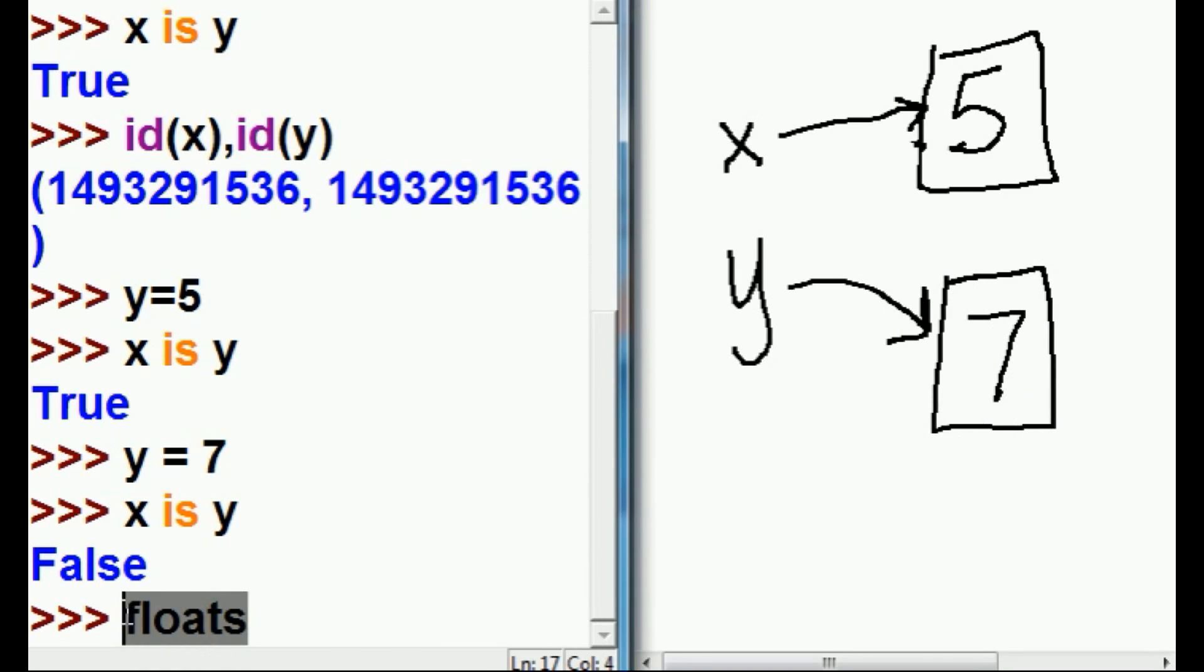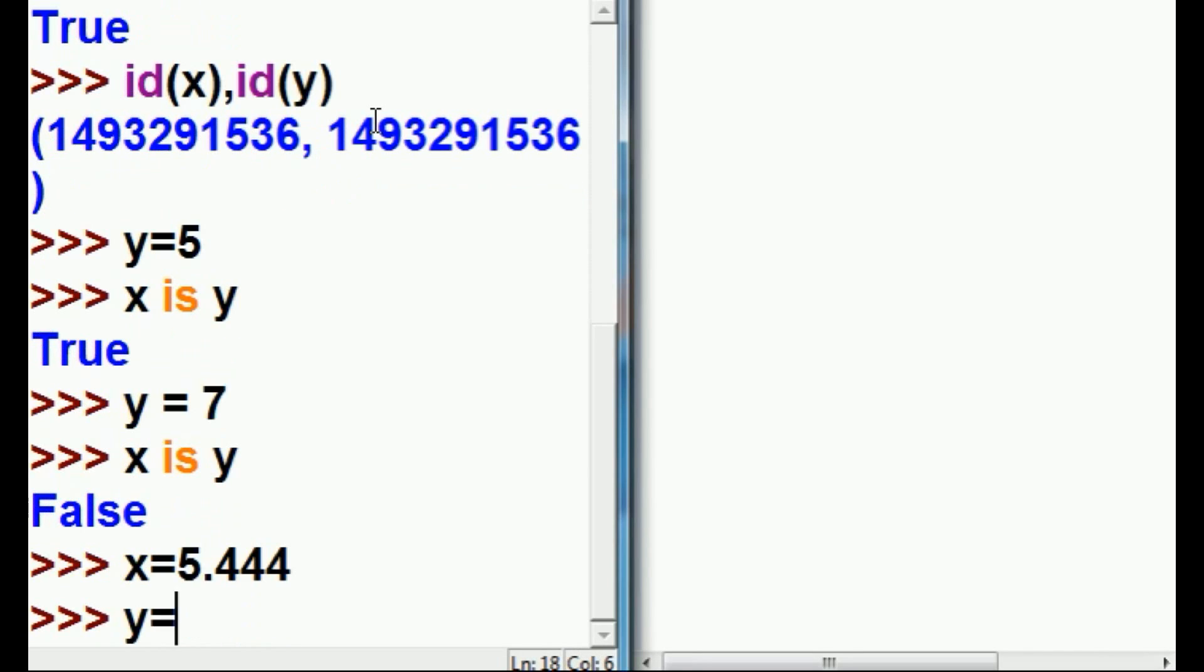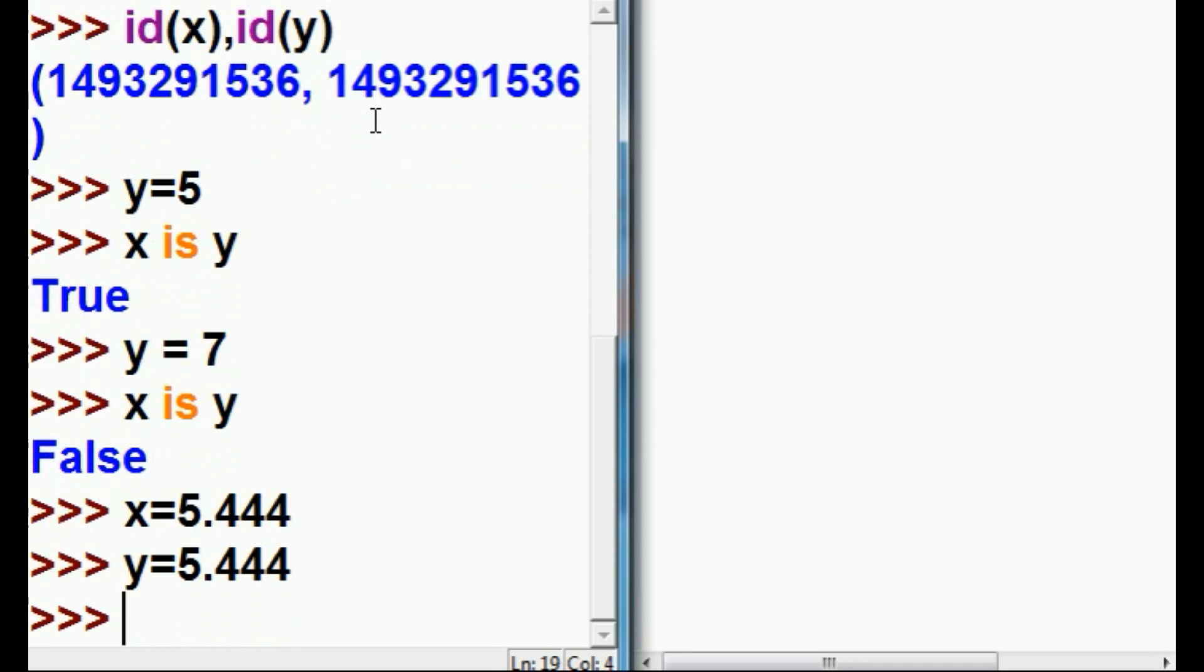Now, let's see what happens when we change this to floats. Here we go. x equals, let's use the basic same numbers, 5.444. And y equals 5.444. So, it should be like the other, yes? Let's find out.